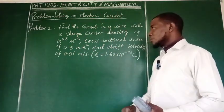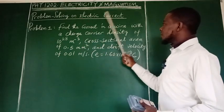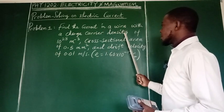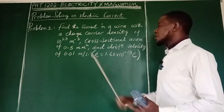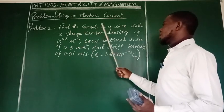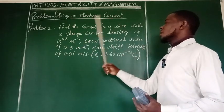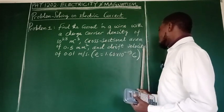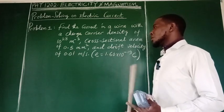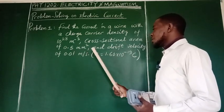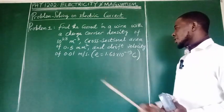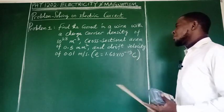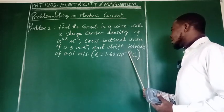The first problem, problem one says find the current in a wire with a charge carrier density of 10 to the power of 28 per cubic meter, cross-sectional area of 0.5 square millimeters and drift velocity of 0.01 meters per second. The elementary charge E is given as 1.60 times 10 to the power of negative 19 coulomb.